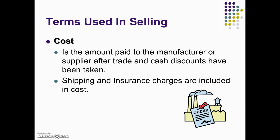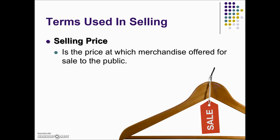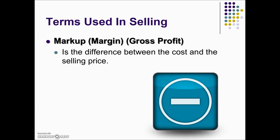Cost is the amount paid to the manufacturer or supplier after trade and cash discounts have been taken. Shipping and insurance charges are included in cost. The selling price is the price at which merchandise is offered for sale to the public. Markup, sometimes referred to as margin or gross profit, is the difference between the cost and the selling price. These three terms are often used interchangeably.